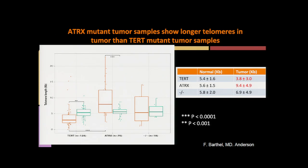We also looked at the relationship between ATRX and TERT promoter mutations and found that they are mutually exclusive in our cohort, as reported in several recent articles. Using normal-tumor-blood samples, we estimated telomere length for each tumor and associated that with whether they are ATRX mutants or TERT promoter mutants. We found that the TERT promoter mutant subgroup has a lower telomere length overall compared to their normal counterparts, whereas ATRX mutants have a longer telomere length.